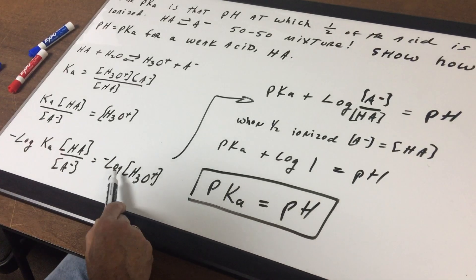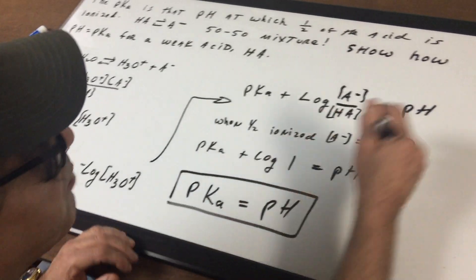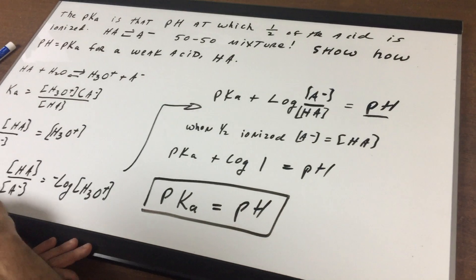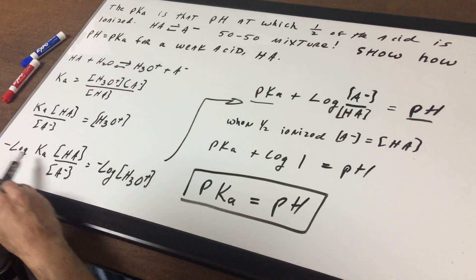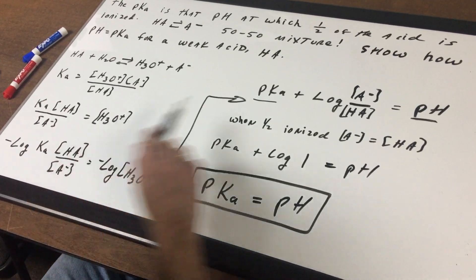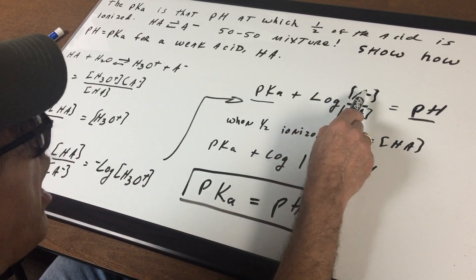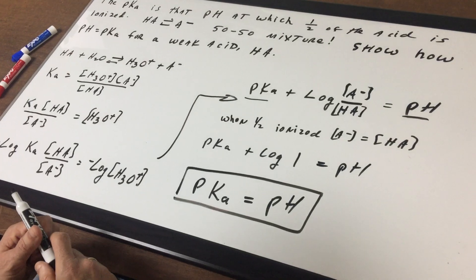I already smell blood. Minus the log of H3O plus is the pH. Minus the log of the Ka is the pKa, and minus the log of HA over A minus is the same as saying plus the log of A minus over HA.